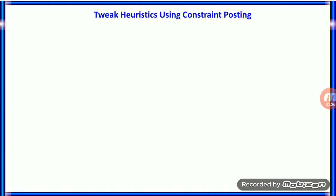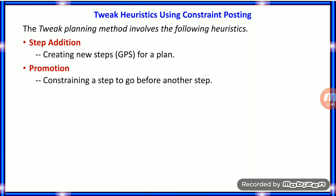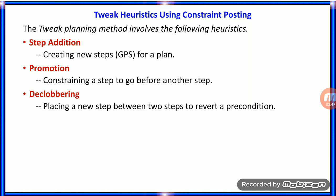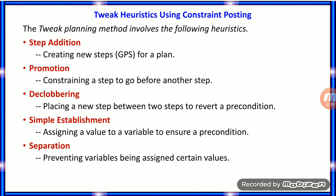Constraint posting uses operators called tweak heuristics. There are five: first, step addition — creating new steps for a plan; second, promotion — constraining a step to go before another step; third, demotion — replacing a new step between two steps to revert a precondition; fourth, simple establishment — assigning a value to a variable to ensure a precondition; and fifth, separation — preventing variables from being assigned certain values.